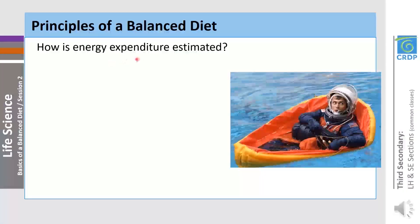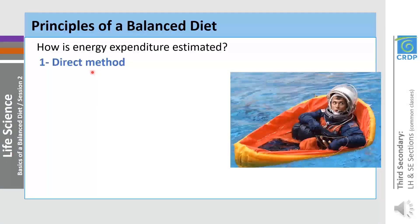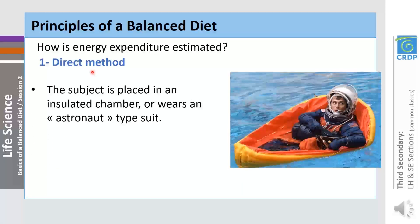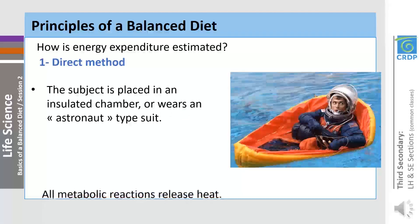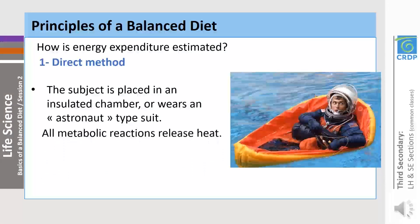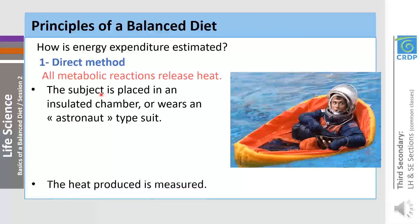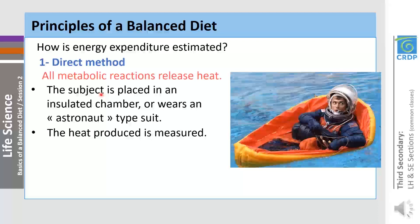How is energy expenditure estimated? Firstly, by a direct method known as direct calorimetry, by measuring directly the amount of heat produced by a subject. During this method, the subject is placed in a sealed and insulated chamber. A known amount of water is circulated through pipes from the top of the chamber, and the heat released by metabolic reactions is transferred from the subject and absorbed by water. The change in water temperature is then measured, so we can determine the amount of heat absorbed by water.